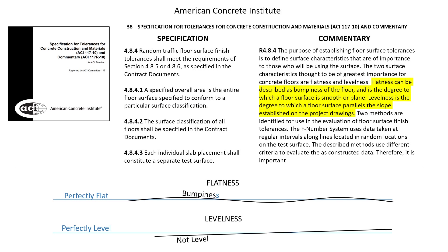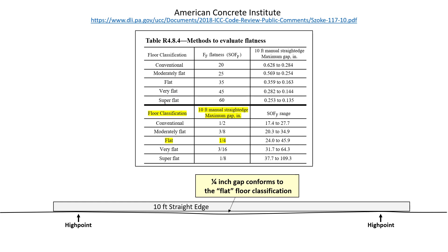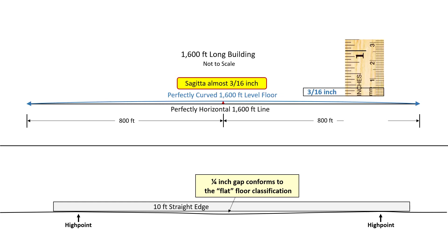There are two tolerances for the surface of a floor. Flatness is how bumpy the surface is compared to a perfectly flat surface, and levelness is how parallel the overall floor is compared to perfectly level. The traditional method of measuring this is with a 10-foot straight edge, and for a floor classification of flat, you are allowed up to a quarter-inch gap. The quarter-inch gap tolerance for a flat floor classification is larger than the sagitta for a perfectly curved 1,600-foot level floor, and this is why I called that 3/16 of an inch negligible for that distance.